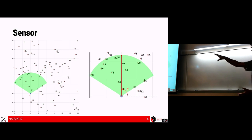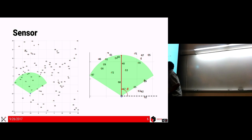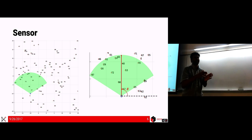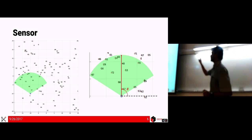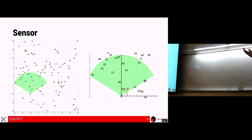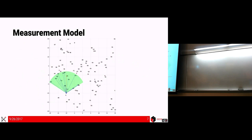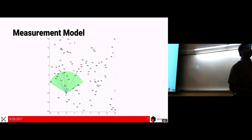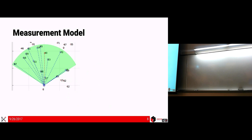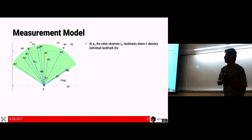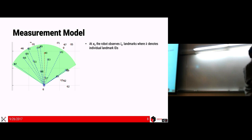You have a sensor on the robot. The robot started here, odometry is perfect at that time, the angle is 90 degrees, and the sensor is symmetric with respect to the robot center. It has a wide field of view — it could be a lidar or a camera. You want to measure distances to landmarks. Let's arbitrarily assume a 120-degree field of view. You need a measurement model that estimates these landmarks.